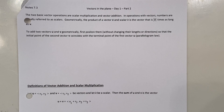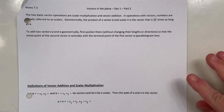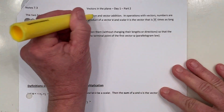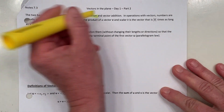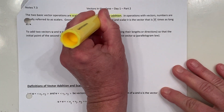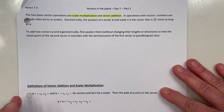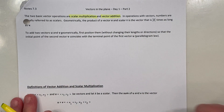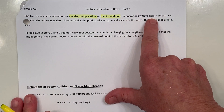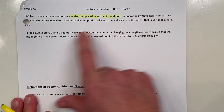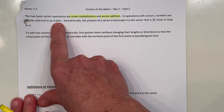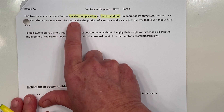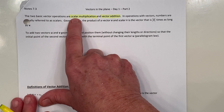In this lesson, we're going to look at two basic vector operations: scalar multiplication and vector addition. In operations with vectors, numbers are usually referred to as scalars. So when we say scalar multiplication, we're just multiplying by a number.